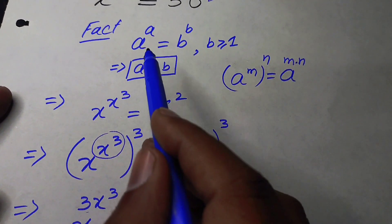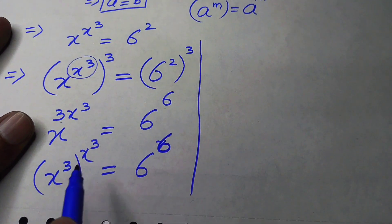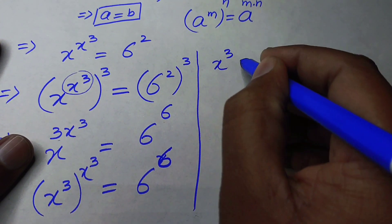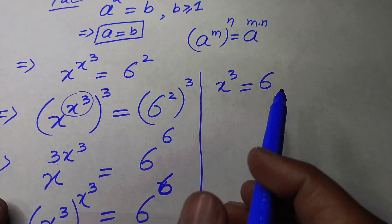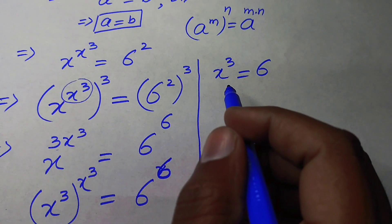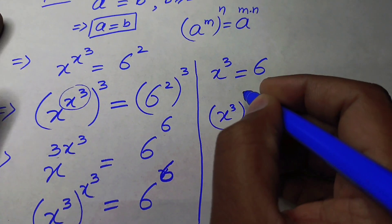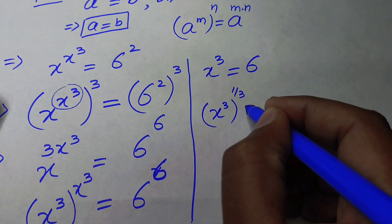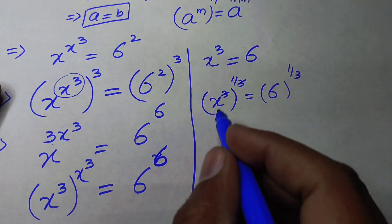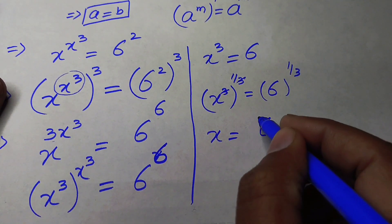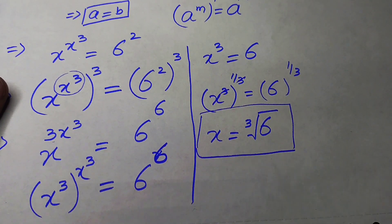Applying the important fact and comparing both sides, we obtain x³ equals 6. To find the value of x, we take the cube root on both sides: x to the power of 3, whole to the power of 1/3, equals 6 to the power of 1/3. The powers cancel and we get x equals the cube root of 6, which is our final answer. Thank you so much for watching.